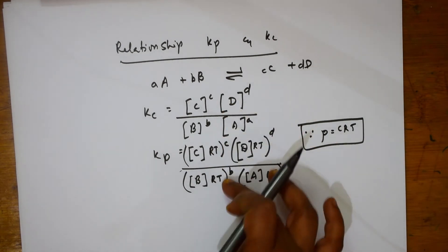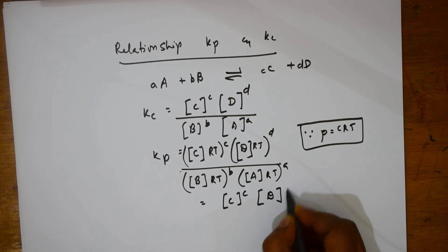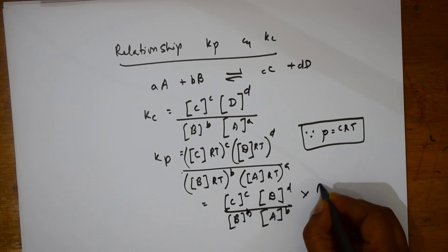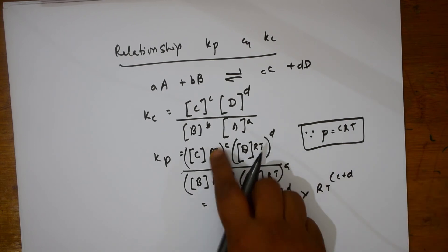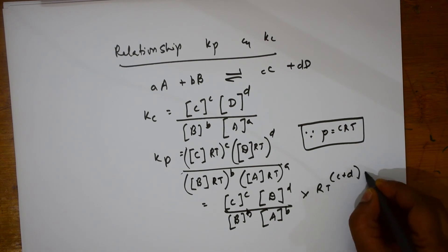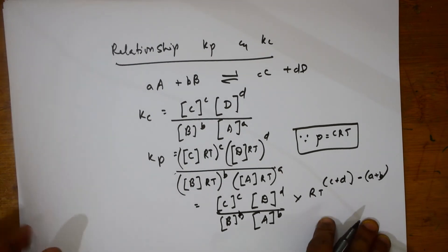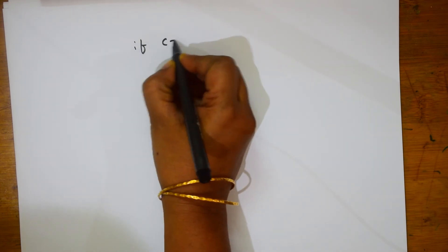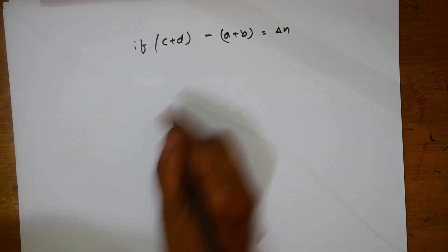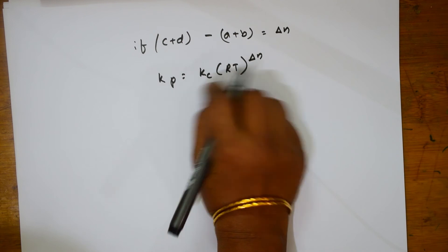Factoring out the common concentration terms, we get KP = KC × (RT)^(c+d−a−b). If we define delta-N as (c + d) − (a + b), then the relationship becomes: KP = KC × (RT)^ΔN. This is the important formula relating KP and KC.